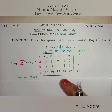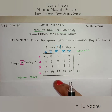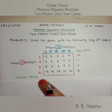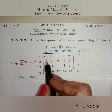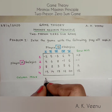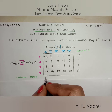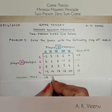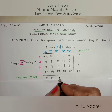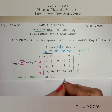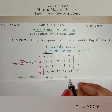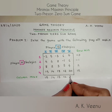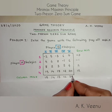Let's proceed to find the column maximum. In the first column the maximum number is 15, then 14, 18, 12, and 20.